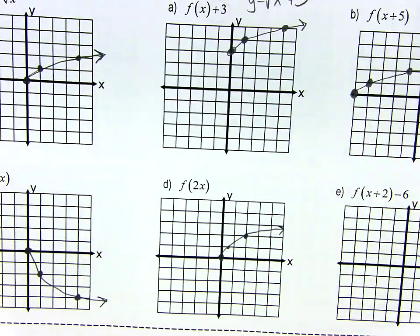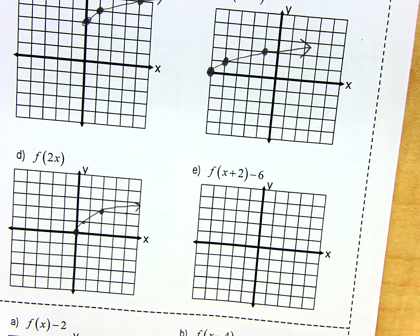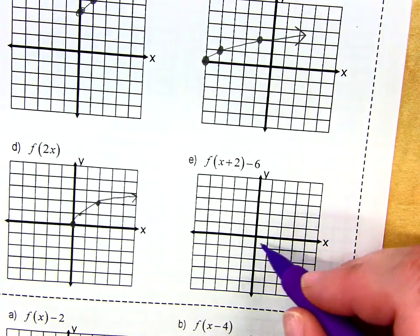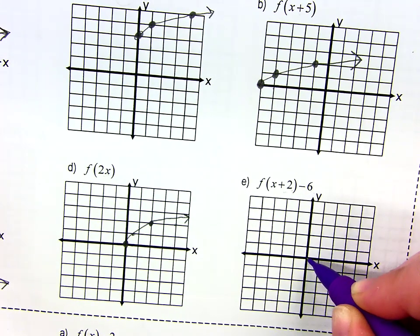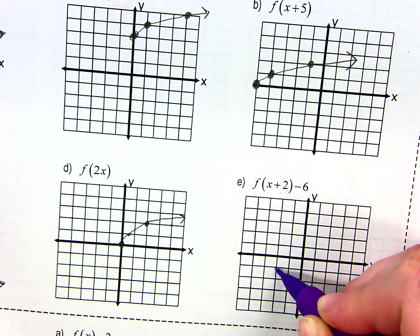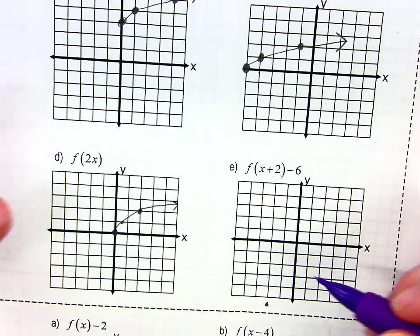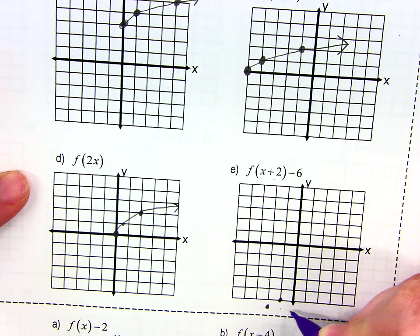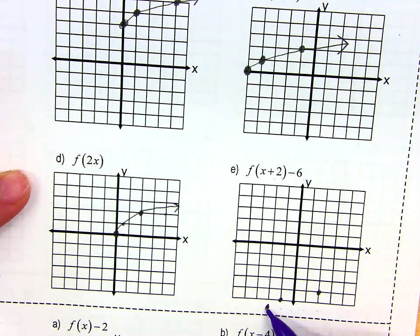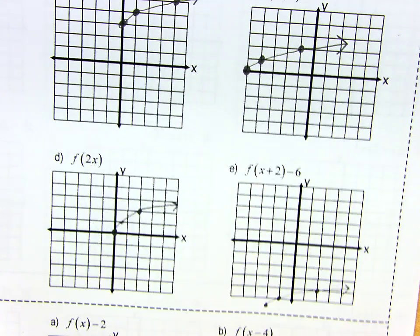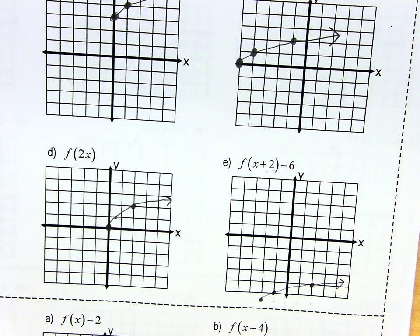For letter e, this is just two shifts together — left 2 and down 6. Take the parent function: instead of starting at 0 comma 0, start left 2 and down 6 — that's your new starting point. Then plot the other dots relative to that. This one did not change the shape of the graph; I didn't stretch it, shrink it, or flip it — I just picked it up and slid it, so it should be an exact replica of the parent function just moved to a new position.